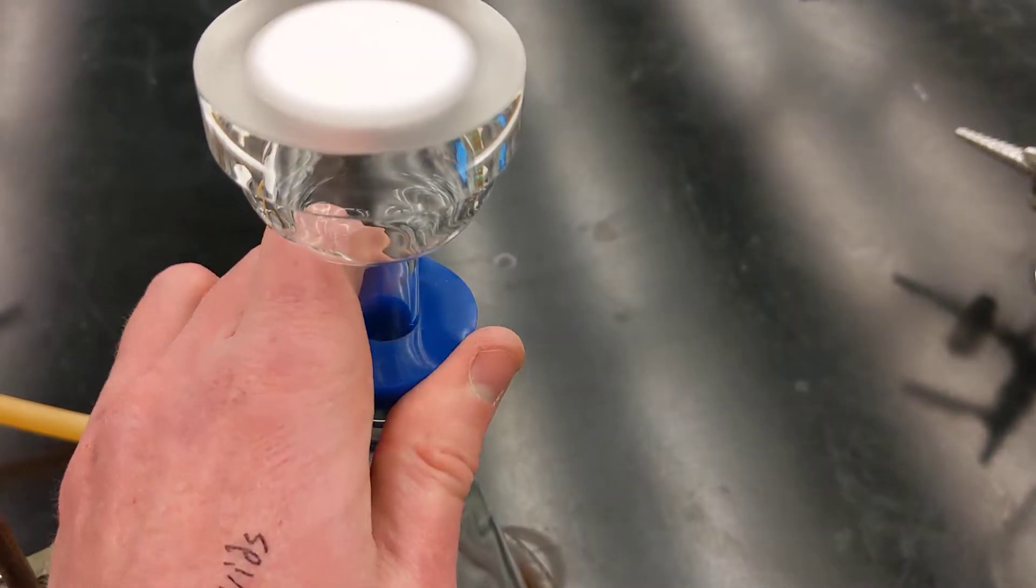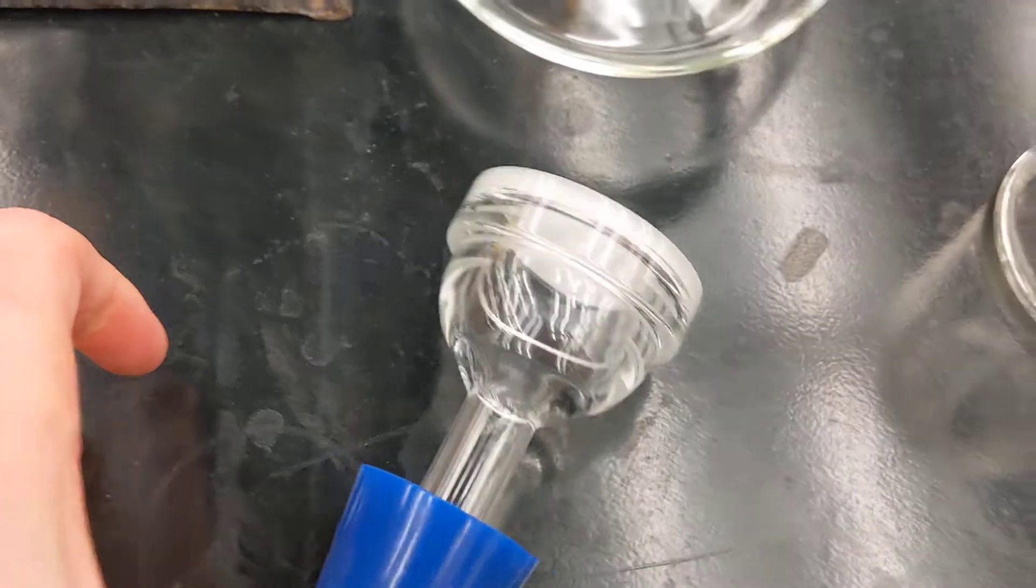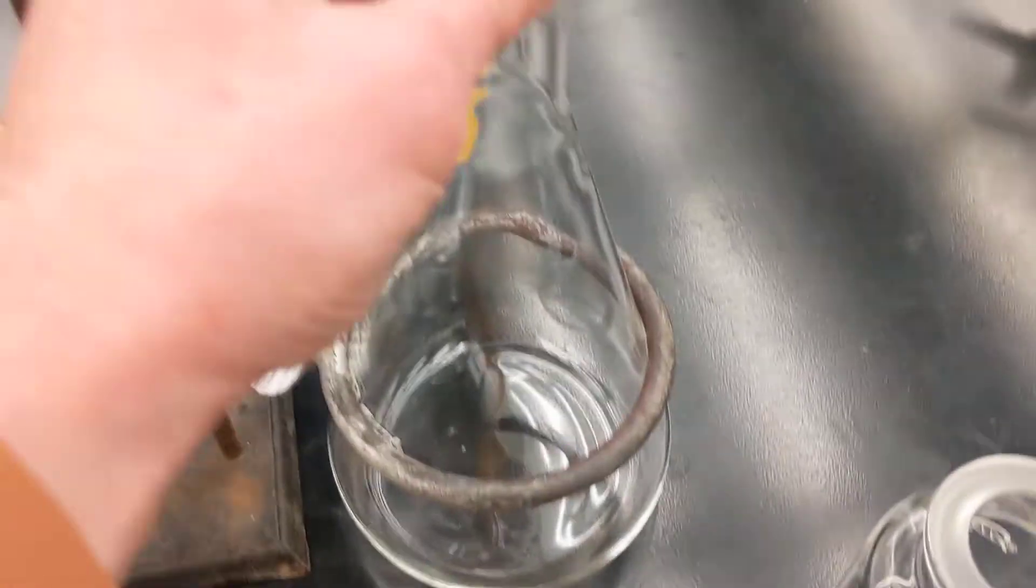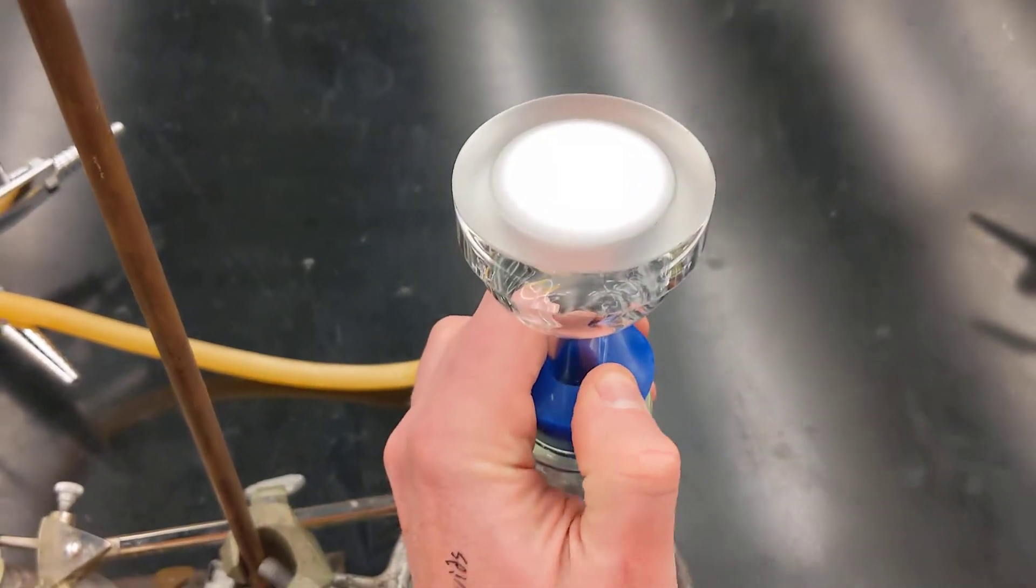So this part comes off here. This is separate. Be careful with this. Don't let it roll off the table while you store it like this. This is what will hold the filter itself. Make sure that's seated nice.